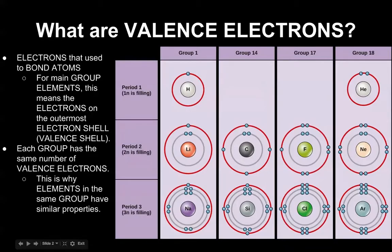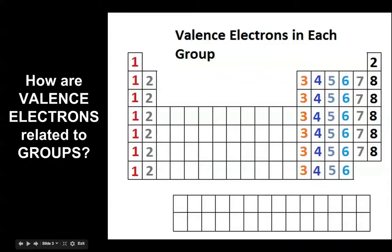So for all intents and purposes, valence electrons are the electrons that are on the outside electron shell, and each group has the same number of valence electrons. How are valence electrons related to groups? Valence electrons are the same in each group. So the first group all has 1 valence electron, the second group all has 2. We did this in the valence electrons activity in class, so this should be a review.